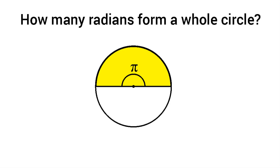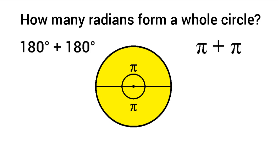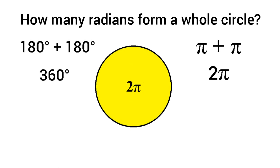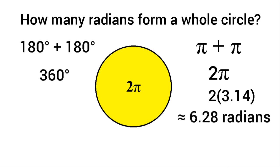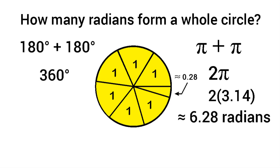How many radians form a whole circle? If half a circle equals one pi, then two halves must equal two pi. So 180 degrees plus 180 degrees equals 360 degrees, and pi plus pi equals two pi. The number of radians forming a full circle is two pi. As a decimal, substituting 3.14 for pi and multiplying by two gives approximately 6.28 radians — we can fit six whole radians plus about 0.28 of a radian.